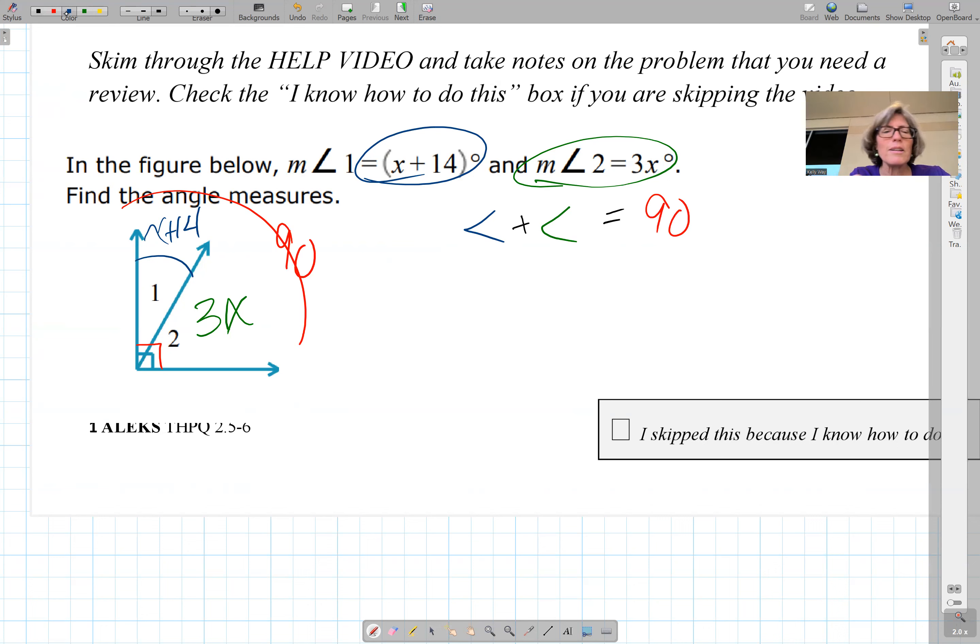Now you circle plug chug. So circle the angle, pick it up. You have x plus 14 plus circle the angle, pick it up, 3x equals 90 degrees.